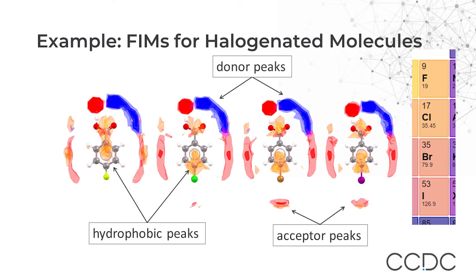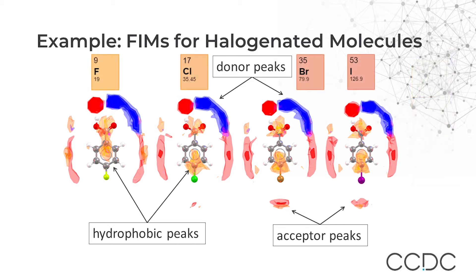In this slide, I'm showing an example of the full interaction maps that is relevant to halogen bonding. Studying the halogenated benzoic acid, the interaction maps around the carboxylic acid group are consistent across the series. The region around the halogen, however, varies depending on the element.